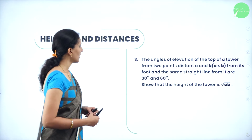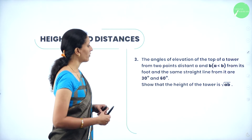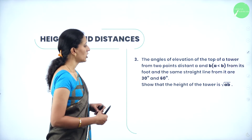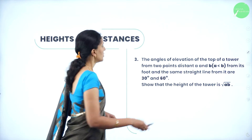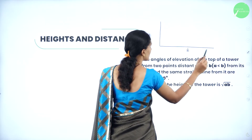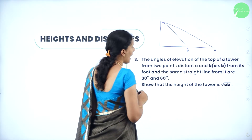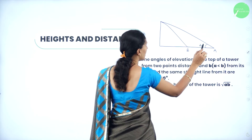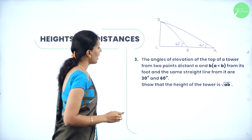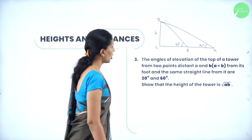Next question: the angle of elevation of the top of a tower from two points distant A and B from its foot on the same straight line are 30 degrees and 60 degrees. Show that the height of the tower is root AB. We have a tower and two different points on a straight line — let me consider these as points A and B. When you look at the tower from these two points, the angle of elevation is 30 degrees from A and 60 degrees from B. Let me write the top as C and D. We have to calculate the height H using the concept of tan theta.